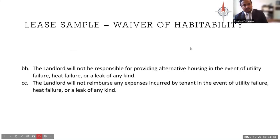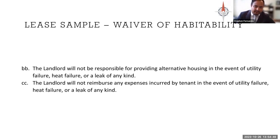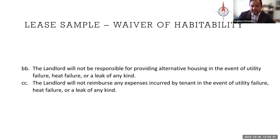A less obvious example: 'A landlord will not be responsible for providing alternative housing in the event of utility failure, heat failure, or leak of any kind. The landlord will not reimburse any expenses incurred by tenant in the event of a utility, heat, or leak.' That's a more masked version of a waiver of habitability — you can't do it. The tenant has rights and may be compensated if the property is no longer habitable.